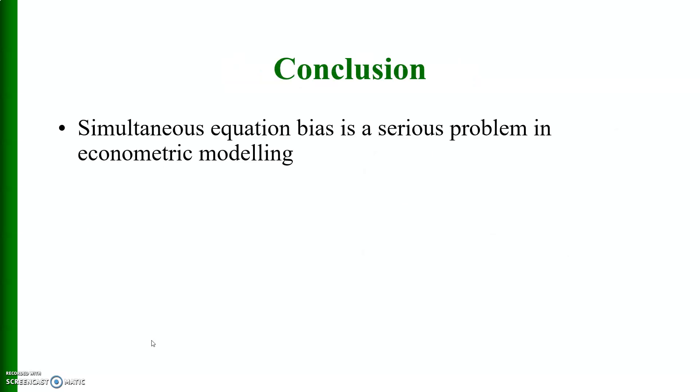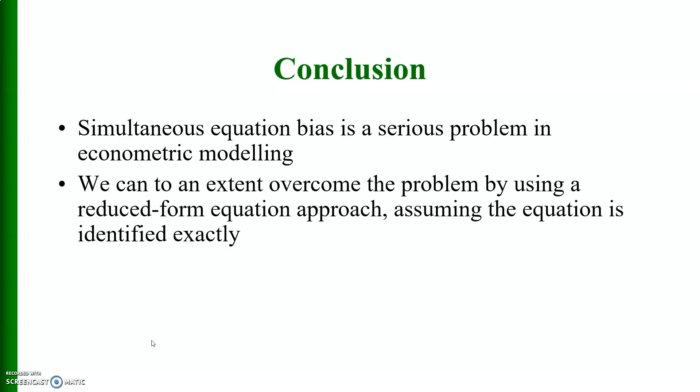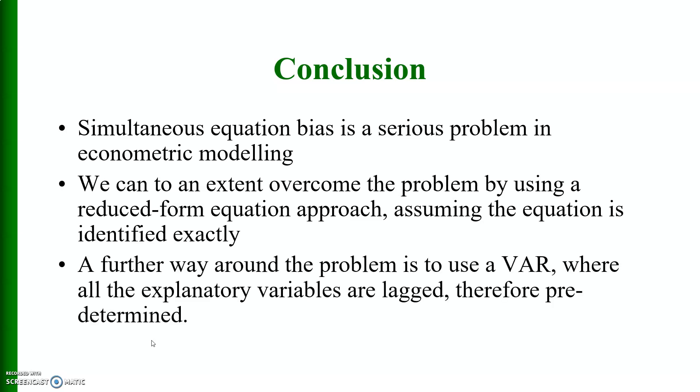Some conclusions. Simultaneous equation bias is a serious problem in econometric models. We can to an extent overcome this problem by using a reduced form equation approach, assuming the equation is exactly identified. Another way around the problem is to use a VAR model, where all explanatory variables are lagged, therefore predetermined, or we may also use two stage least squares by introducing instrumental variables which are used instead of the endogenous variable.